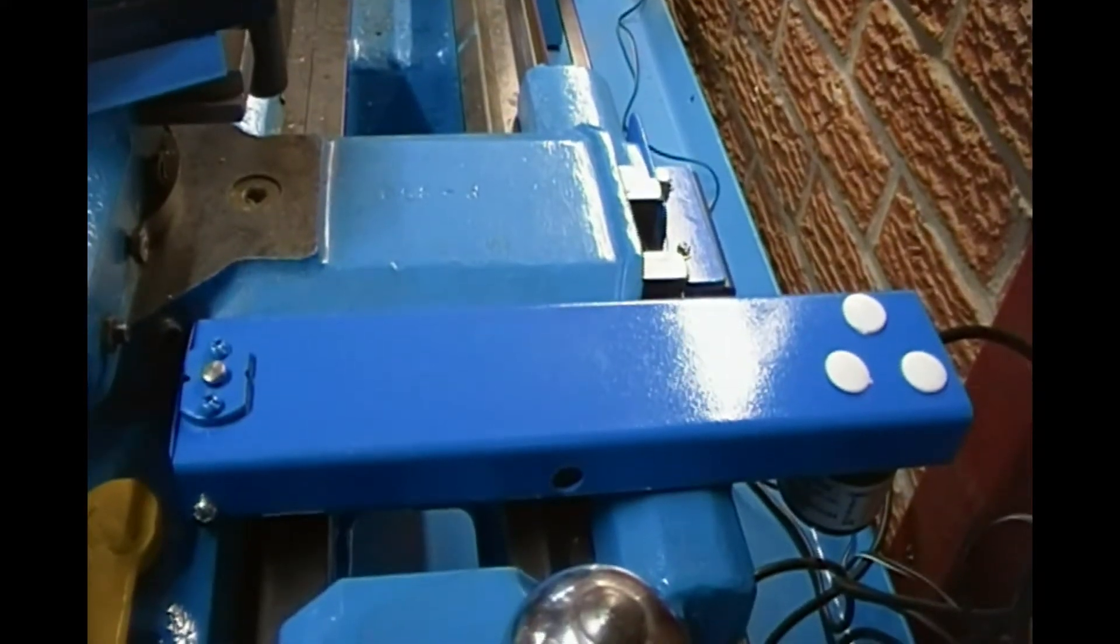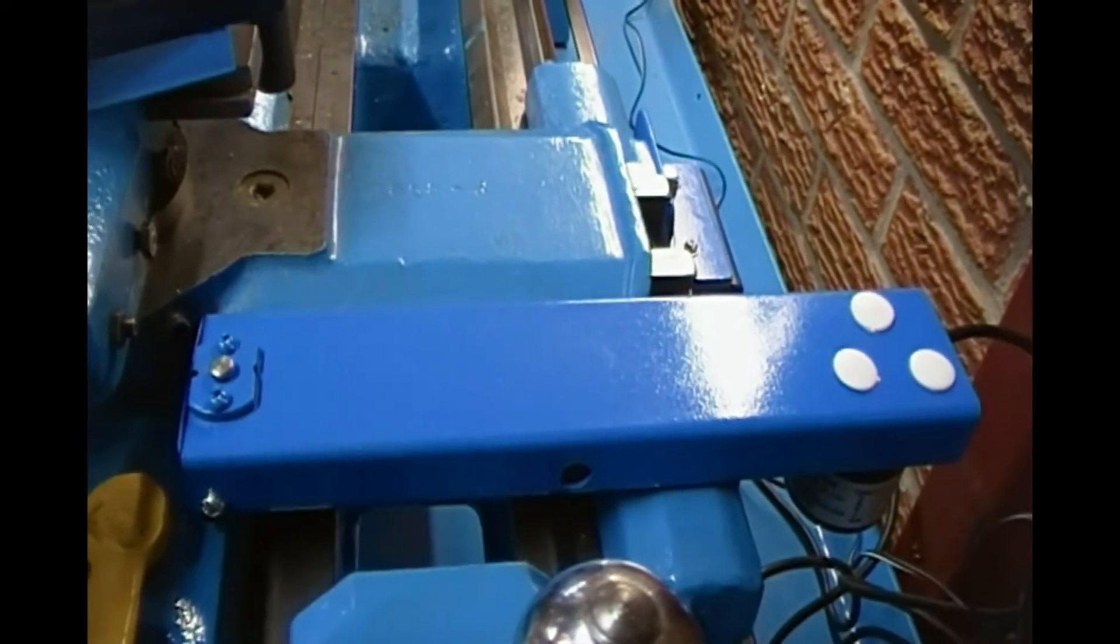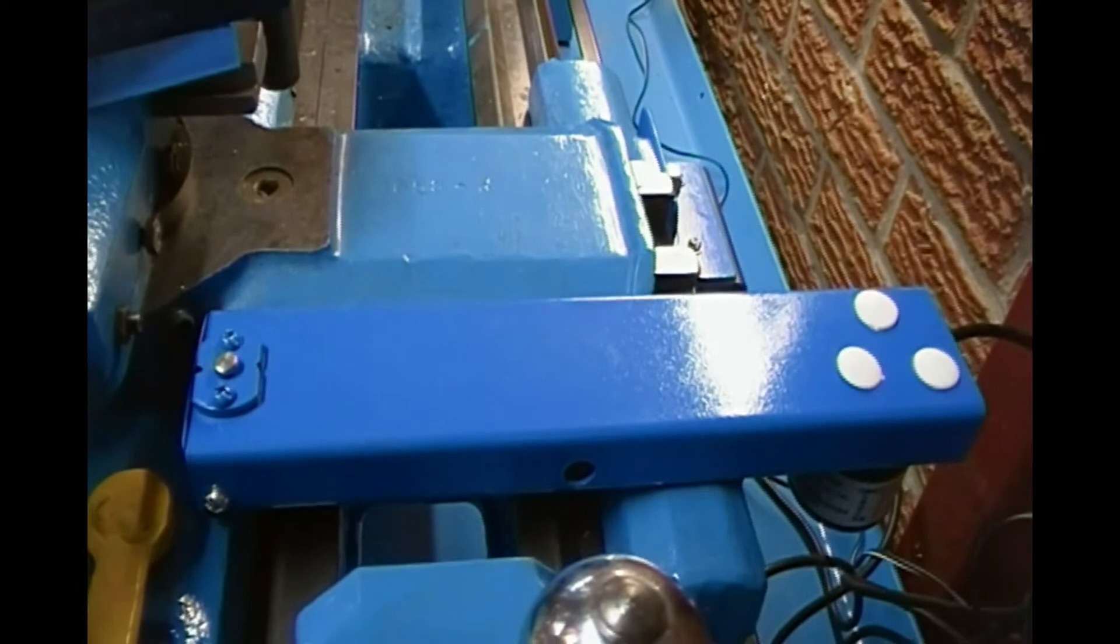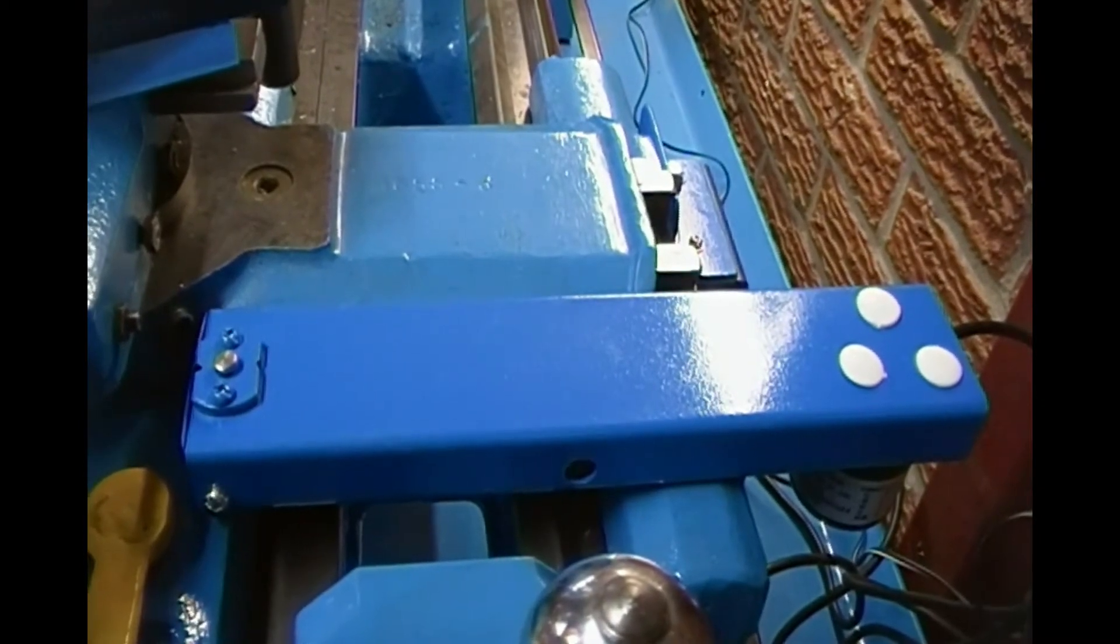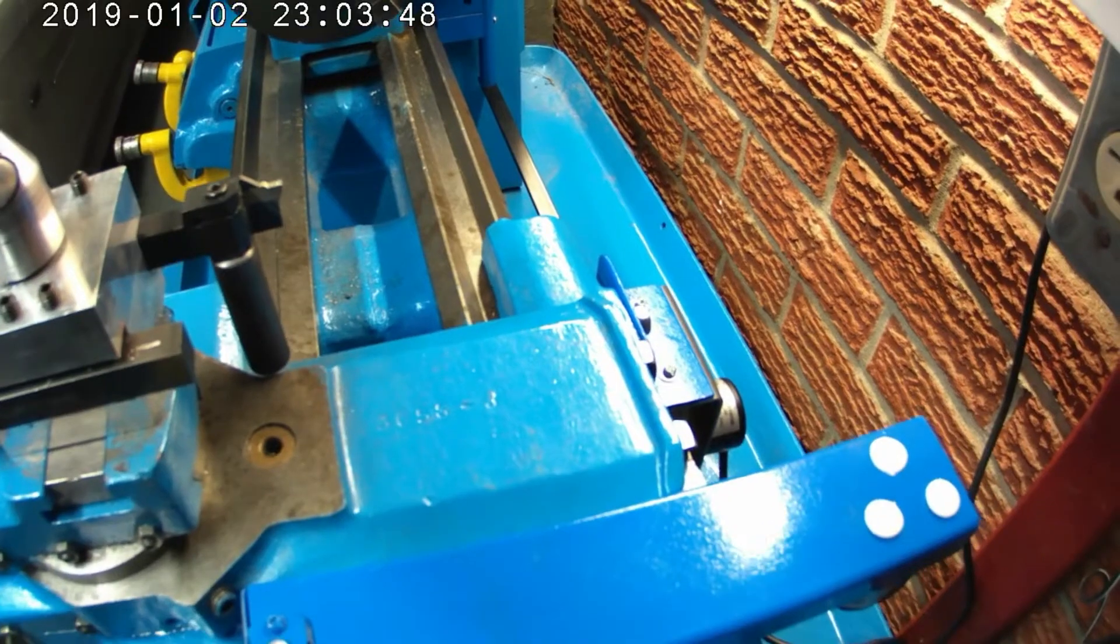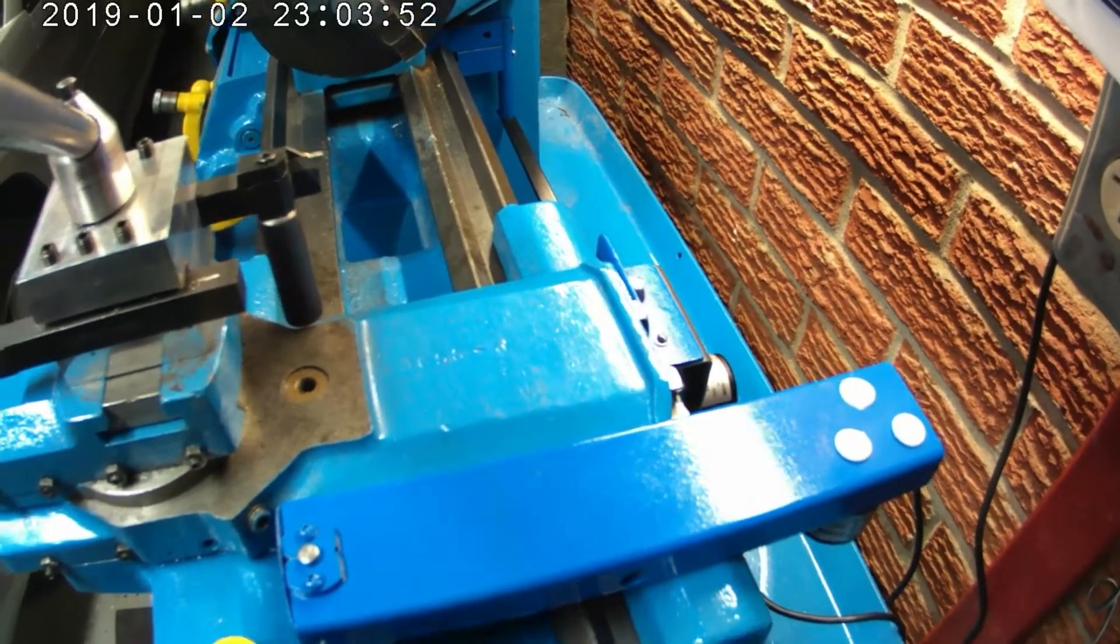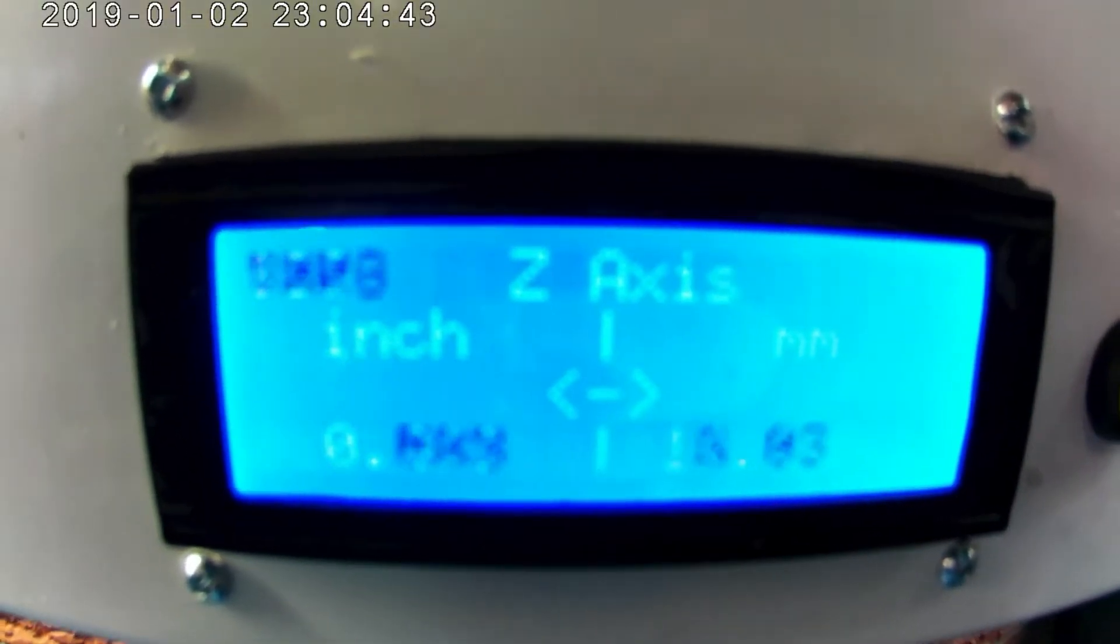In my last video I demonstrated how I built a 6 inch or 150 millimeter digital readout sensor for my lathe x-axis. In this video I will show you how I made a much longer DRO sensor for my lathe z-axis.